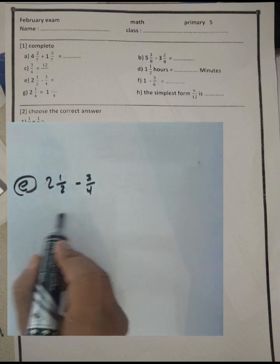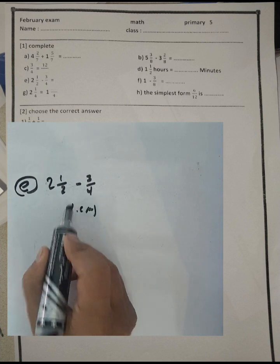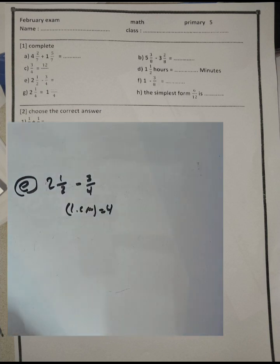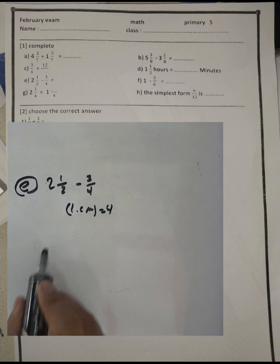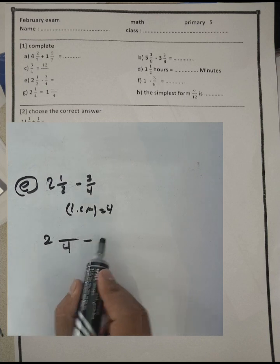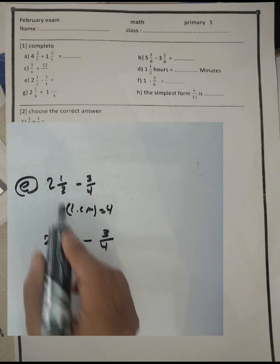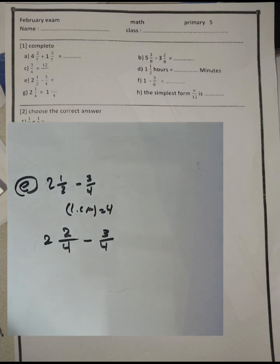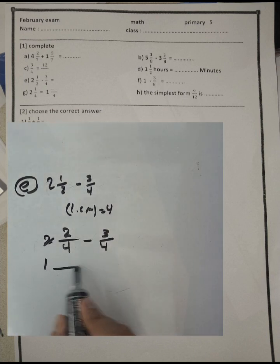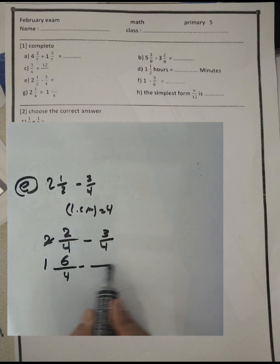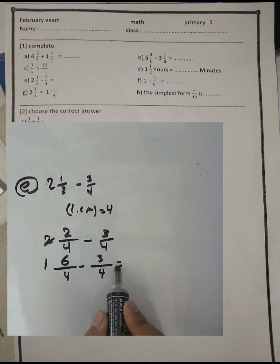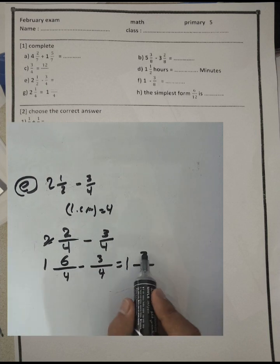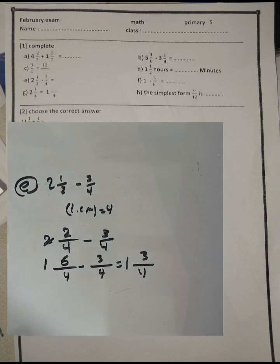Letter E: two and a half subtract by three over four. We find the least common multiple between them, which is four. Write two and four in the numerator: two times two equals four, two times one equals two. Since two minus three we can't do, we borrow one from two, giving one and four over four plus two over four, which is six over four. Subtract three over four: write one outside, six minus three equals three. The result is one and three over four.